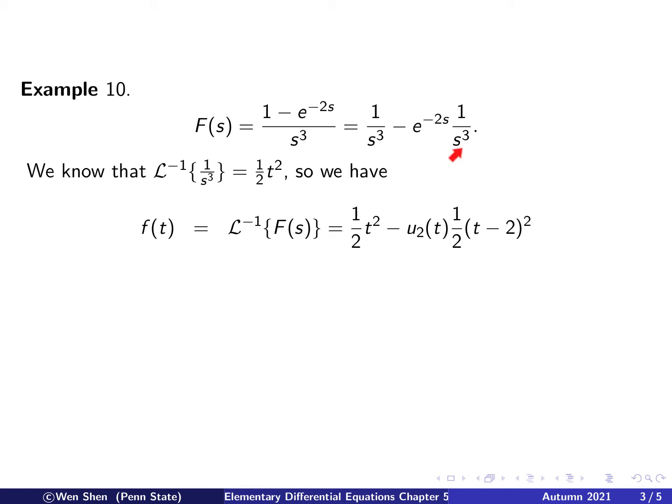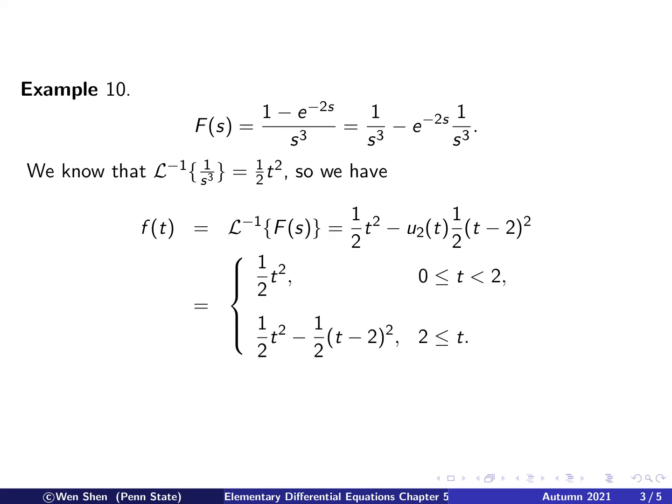For the second term, we see that it is the same function with a shift by 2 units. So what you have to do is multiply by u₂ of t and write f of t minus 2 — that is, wherever you have t, replace it with t minus 2, giving one-half times (t minus 2) squared. This becomes the inverse Laplace transform for this function F, which contains a unit step function taking a step at t equals 2, so we know this function possibly has a discontinuity at t equals 2.